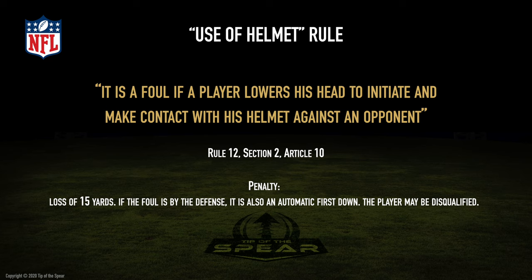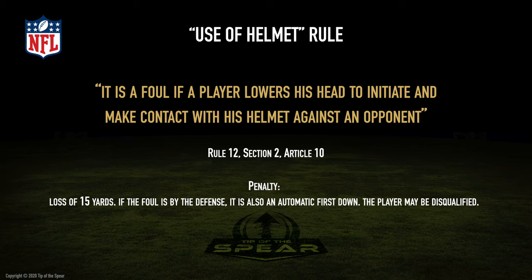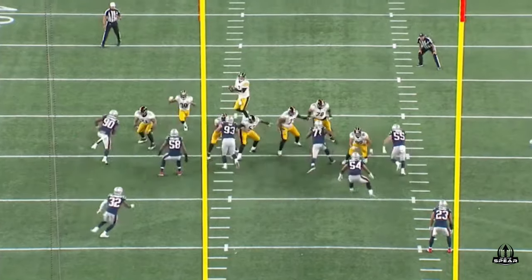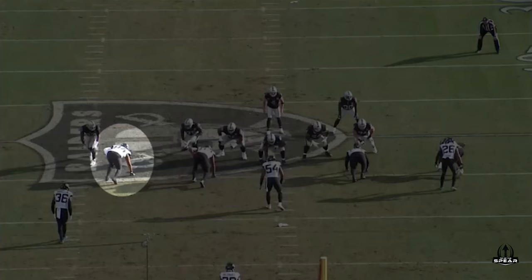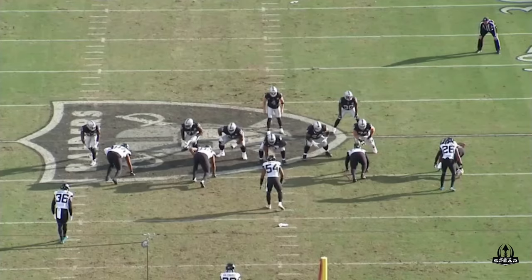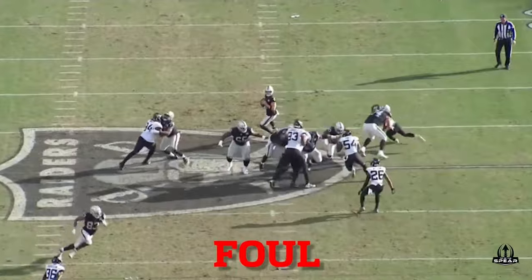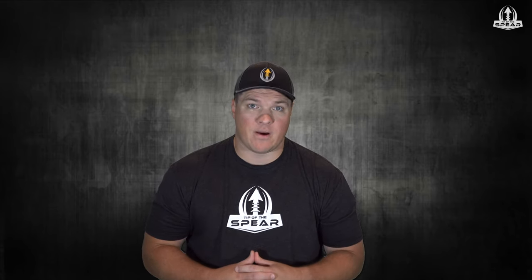The current use of helmet rule states it is a foul if a player lowers his head to initiate and make contact with his helmet against an opponent. When we watch game film of these players initiating a bull rush or a mobile block with their helmet, it's easy to see the concerns regarding player safety as these players are delivering and absorbing forceful impact with their helmet.